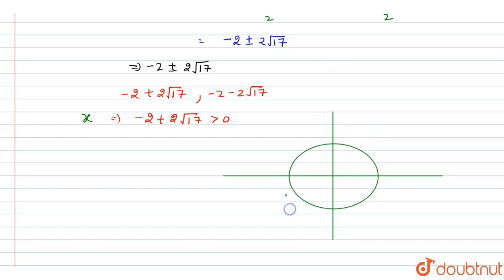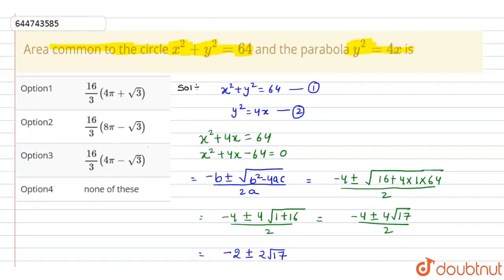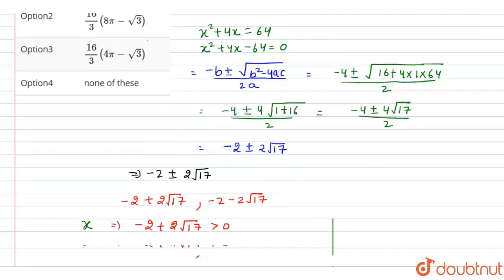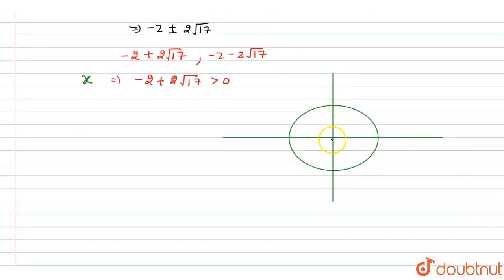The circle x² + y² = 64 has center (0, 0) and radius r = 8, since r² = 64. The parabola is y² = 4x, which has the form y² = 4ax with vertex at the origin (0, 0). We need to find the area bounded by the circle and the parabola, which consists of two symmetric regions — area 1 and area 2 — symmetric about the x-axis.